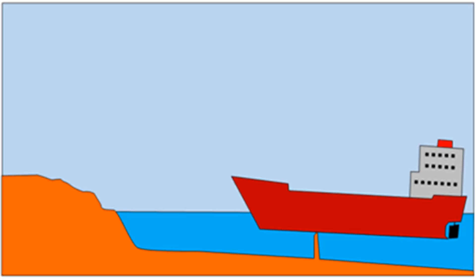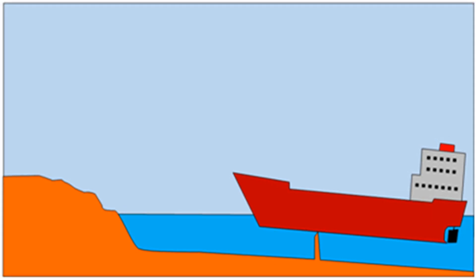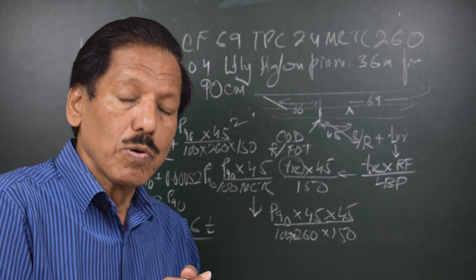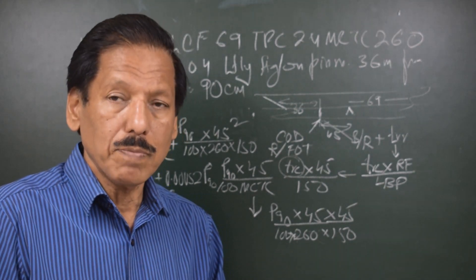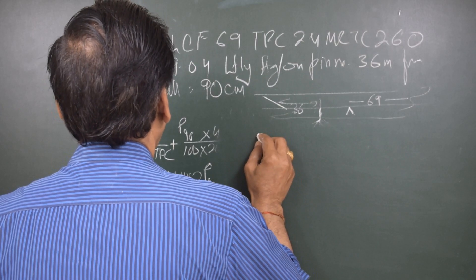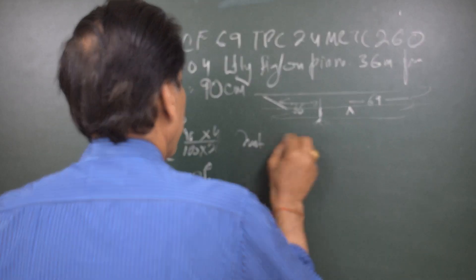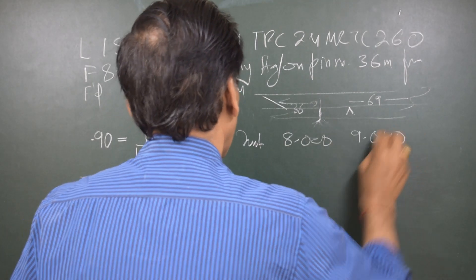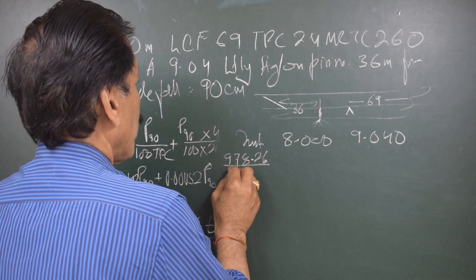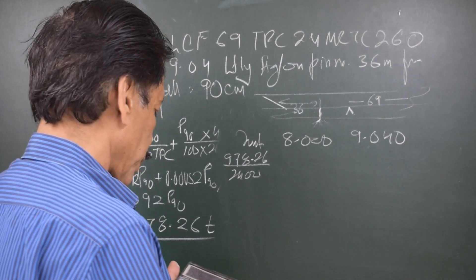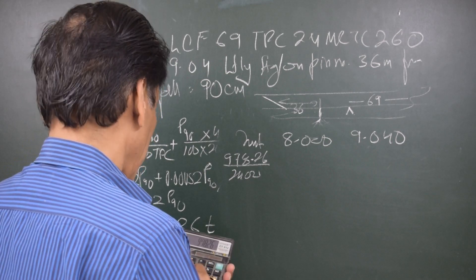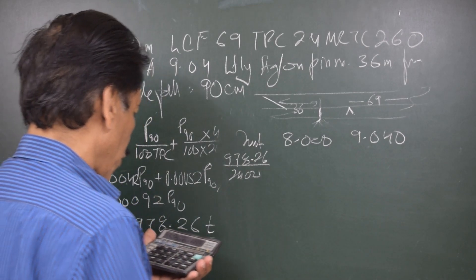What is the final draft because of this? Now I always tell my students, whenever we have to find out from initial draft to final draft, we do the calculations in two steps. In the first step you apply bodily rise, and in the second step you apply the trim change. I call that standard trim format. Let's do it. So we start with the initial draft: 8.000 and 9.040. Then you have bodily rise. Bodily rise will be 978.26 divided by 100 TPC. That gives me 0.408.